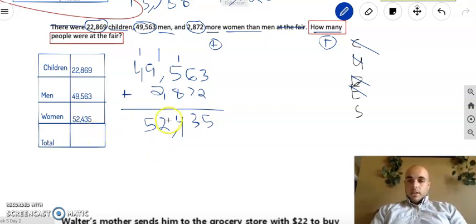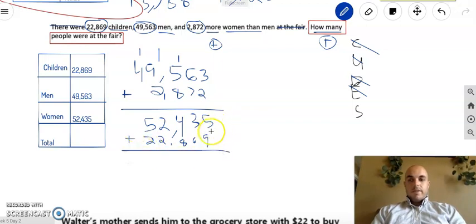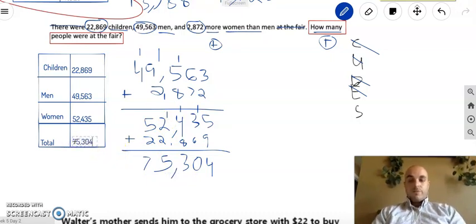Now I need to find the total. So I'm going to add up all three of these just like we did in the past. I'm actually just going to add right from the bottom of this one, which is the total of women, to make things a little easier for myself. And I'll start with that top number, 22,869. 5 plus 9 is 14, carry the 1. 1 plus 3 is 4, plus 6 is 10. 1 plus 4 is 5, plus 8 is 13. Carry the 1. 1 plus 2 is 3, plus 2 is 5. 5 plus 2 is 7. So total people, 75,304.